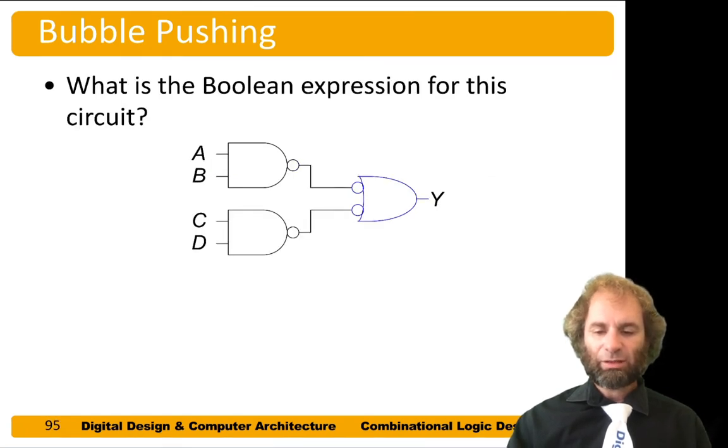Now any time you have bubbles that line up, they cancel. This is by involution. Two wrongs make a right. And so cancelling it becomes easy to read off the truth table for this circuit. It's Y equals A and B or C and D.